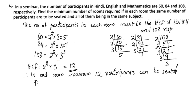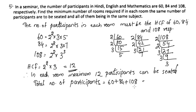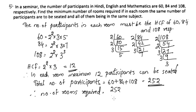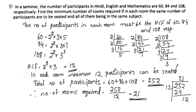We have the total number of participants: 60 plus 84 plus 108 is equal to 252. The number of rooms required is equal to the total number of participants divided by participants in each room, that is 252 divided by 12. 252 divided by 12 equals 21. Therefore, there are 21 rooms, with 12 participants in each room.